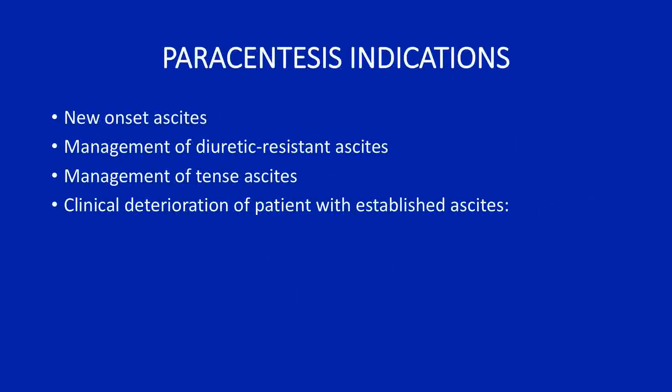Common indications for paracentesis include new-onset ascites, management of diuretic-resistant ascites, management of tense ascites, and clinical deterioration of a patient with established ascites, such as a patient now presenting with fever, abdominal pain or tenderness, hepatic encephalopathy, acidosis, or GI bleeding.